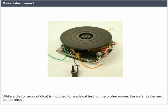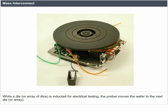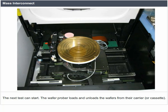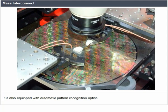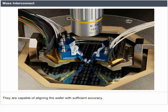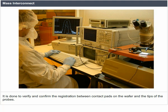While a die or array of dies is inducted for electrical testing, the prober moves the wafer to the next die or array, and the next test can start. The wafer prober loads and unloads the wafers from their carrier or cassette. It is also equipped with automatic pattern definition optics, capable of aligning the wafer with sufficient accuracy to verify and confirm the registration between contact paths on the wafer and the tips of the probes.